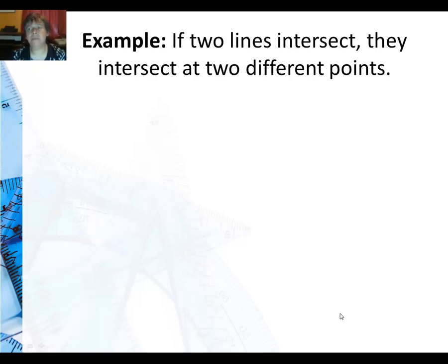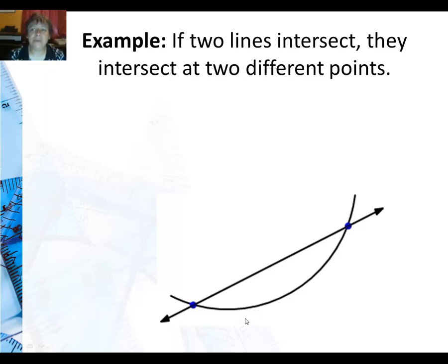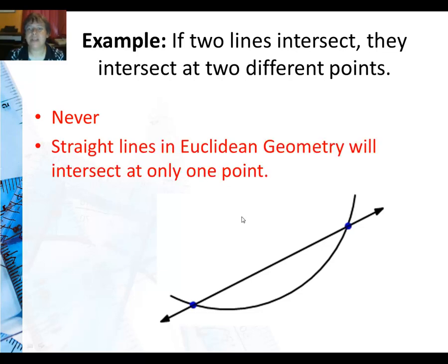So on your example table, it says if two lines intersect, they intersect at two different points. Well, the only way that could happen is if I did some sort of curvy thing like that. Well, if I do a curvy thing like that, then no, that's not a straight line. We're doing Euclidean geometry now, so we're back to normal straight lines. So we will say never. Straight lines in Euclidean geometry will intersect at only one point.